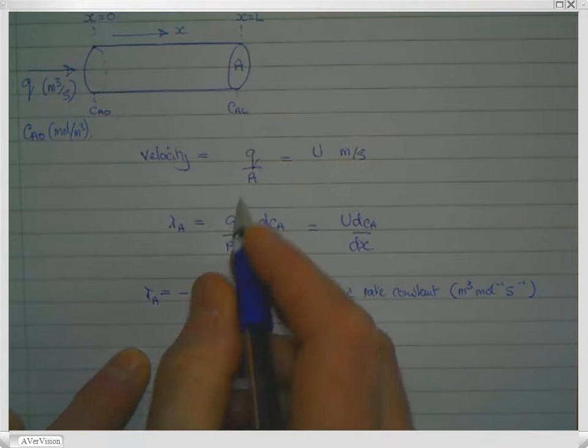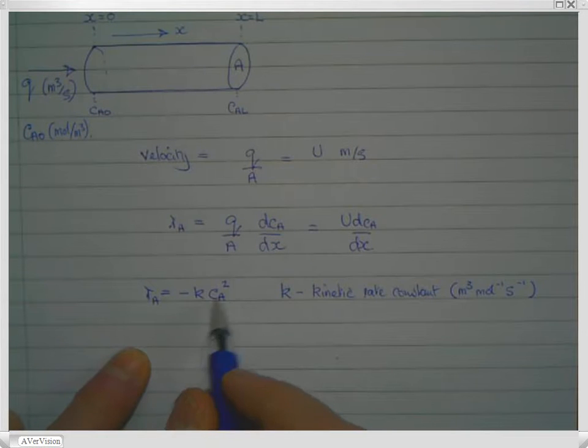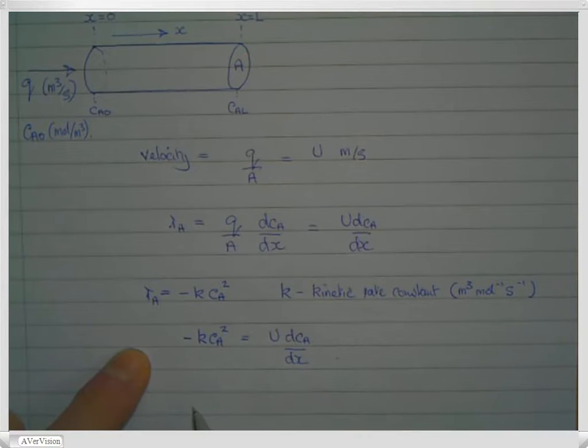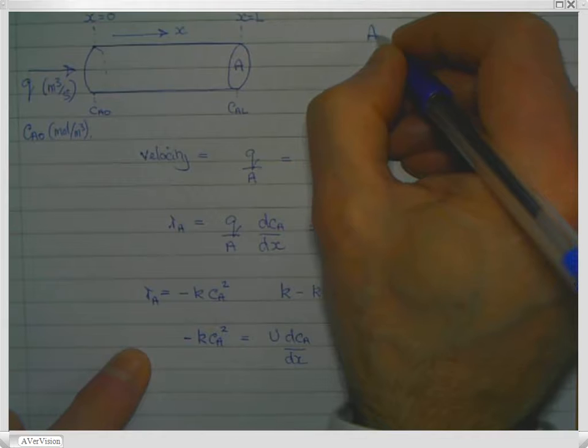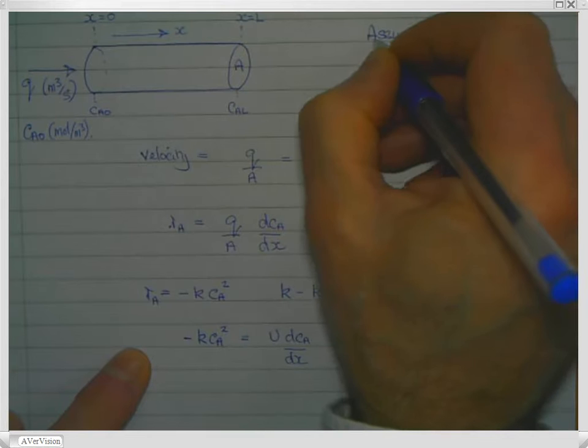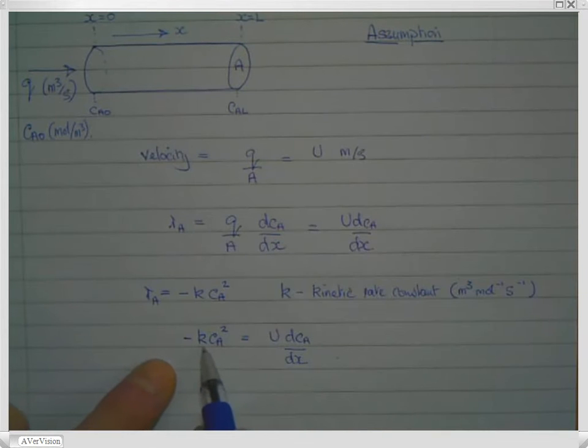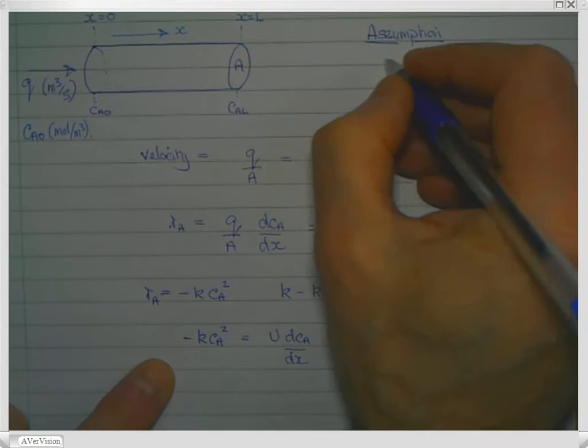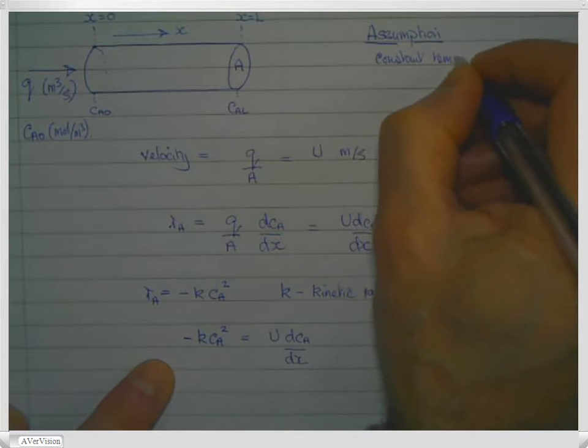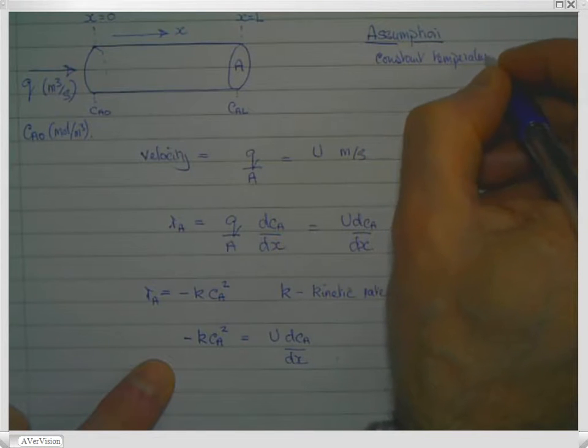And we can substitute this equation into here, and we get that minus K times Ca squared is equal to U times dCa by dx. And we'll just make a note of another assumption here, because in order to do this integration, we're going to assume that K is constant, or the kinetic rate constant is constant, and that will be the case if we have constant temperature along the length of the reactor.